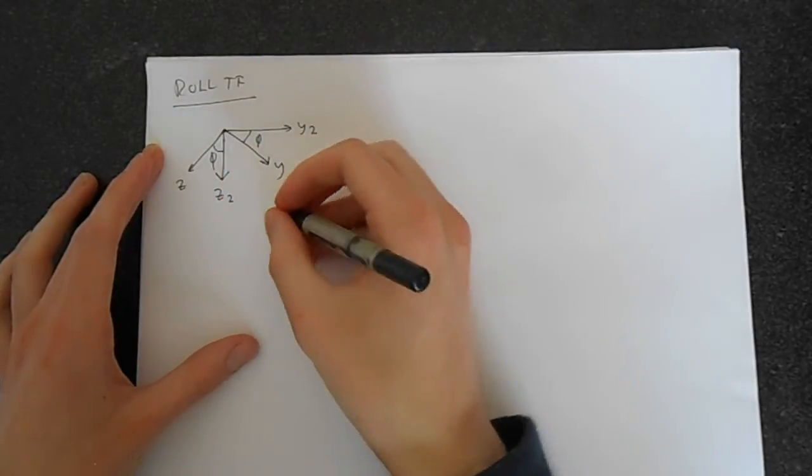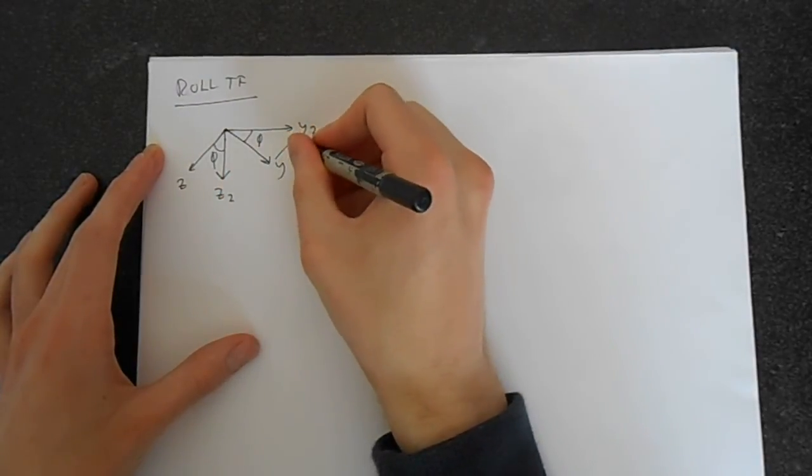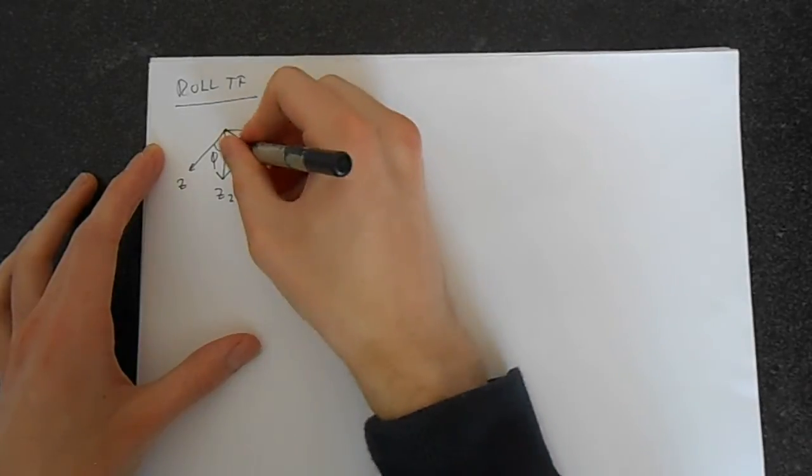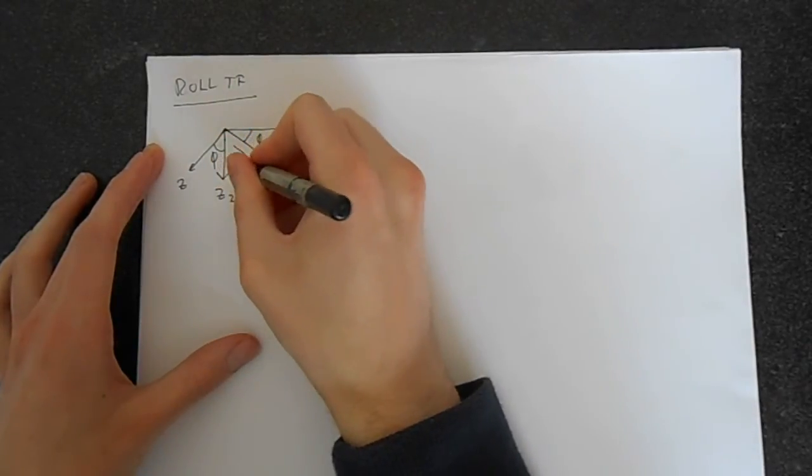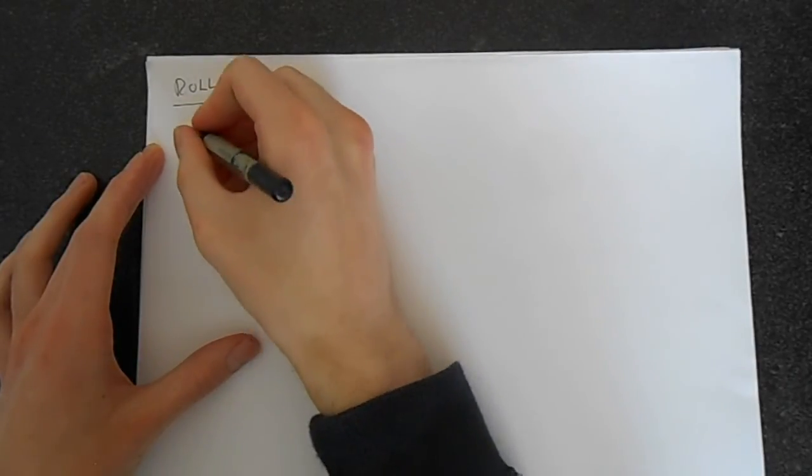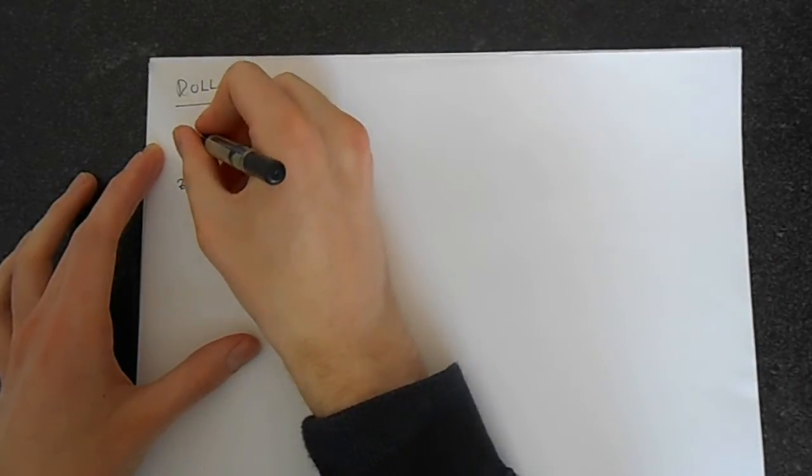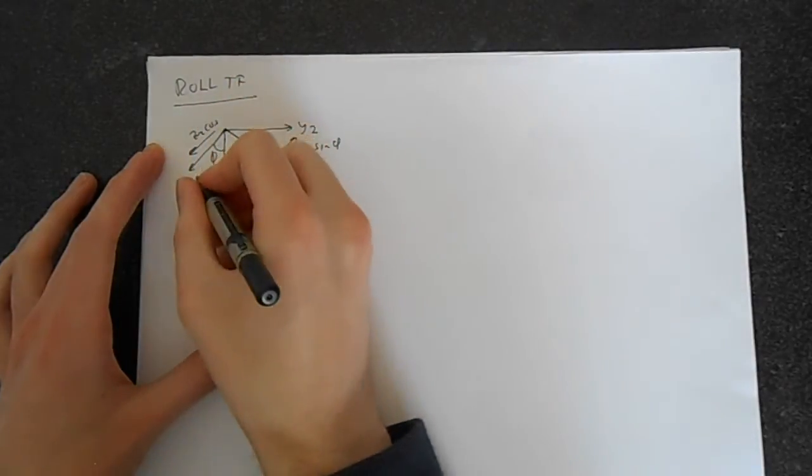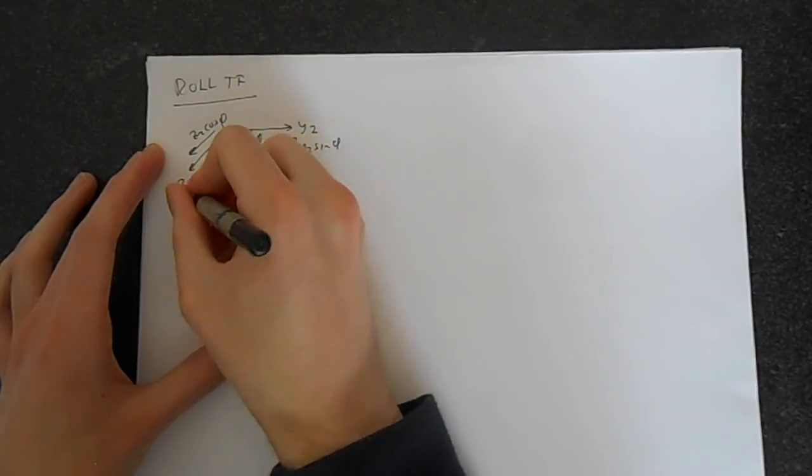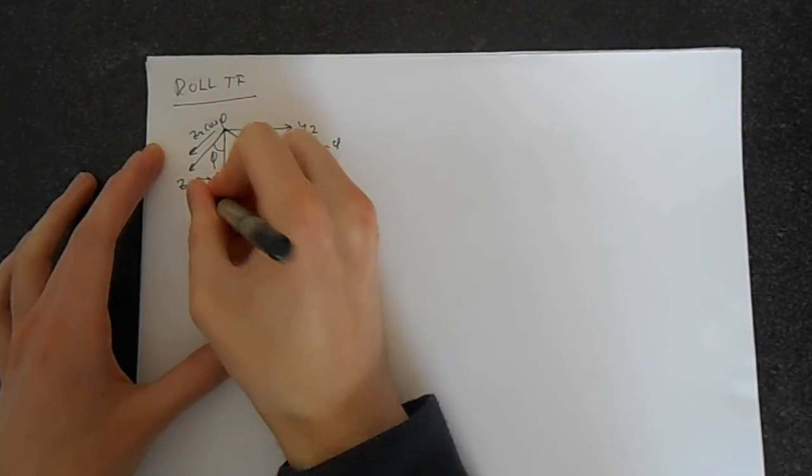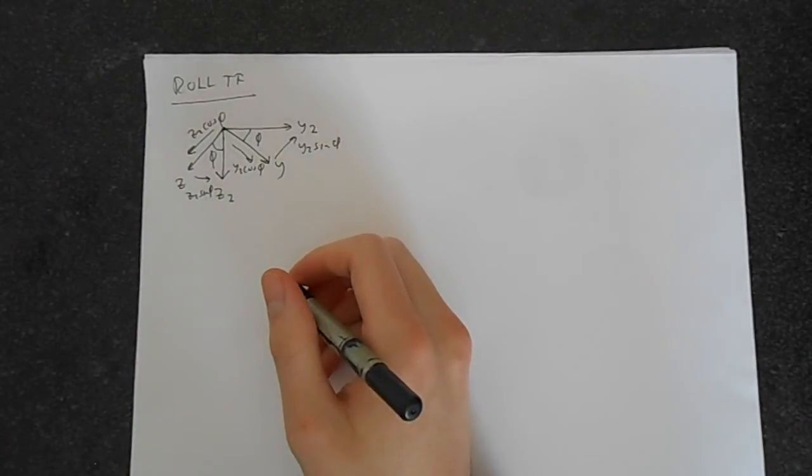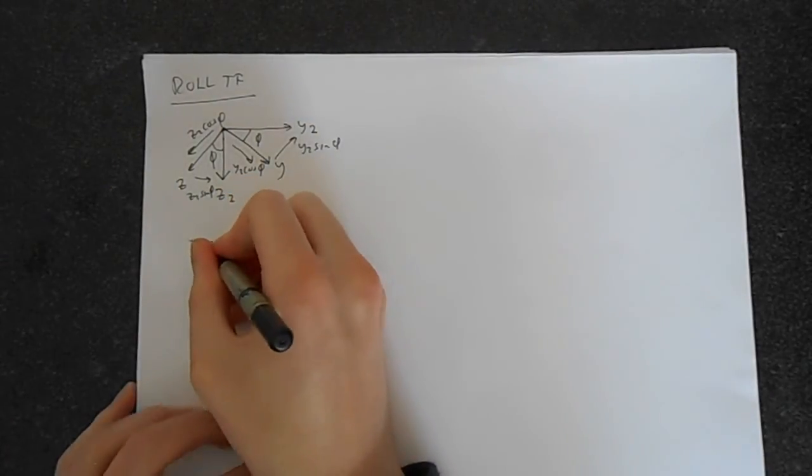And you can break it down in exactly the same way. That's going to be Y2. This is going to be Y2 cos. You're going to have in here, you're going to have a Z2 cos. I'll put a φ on the end of that. And a Z2 sin.